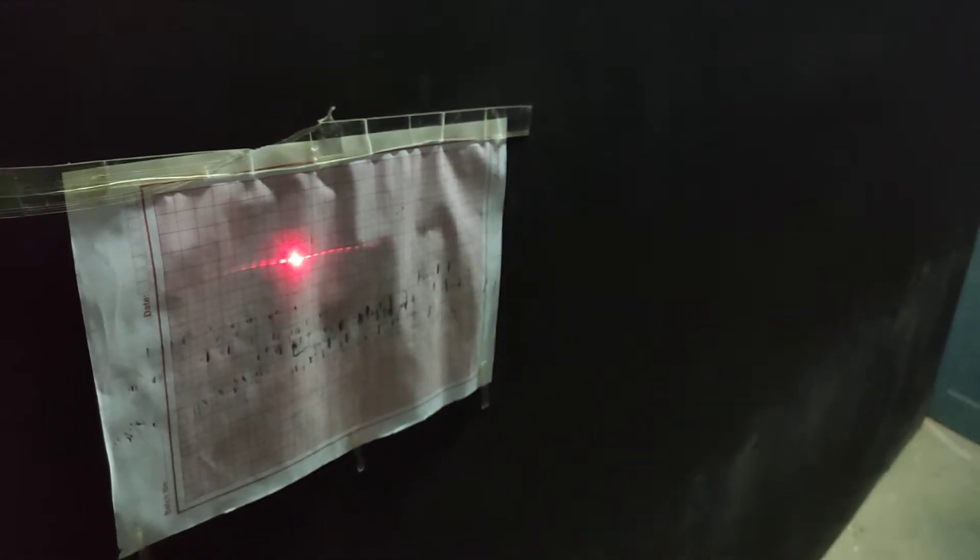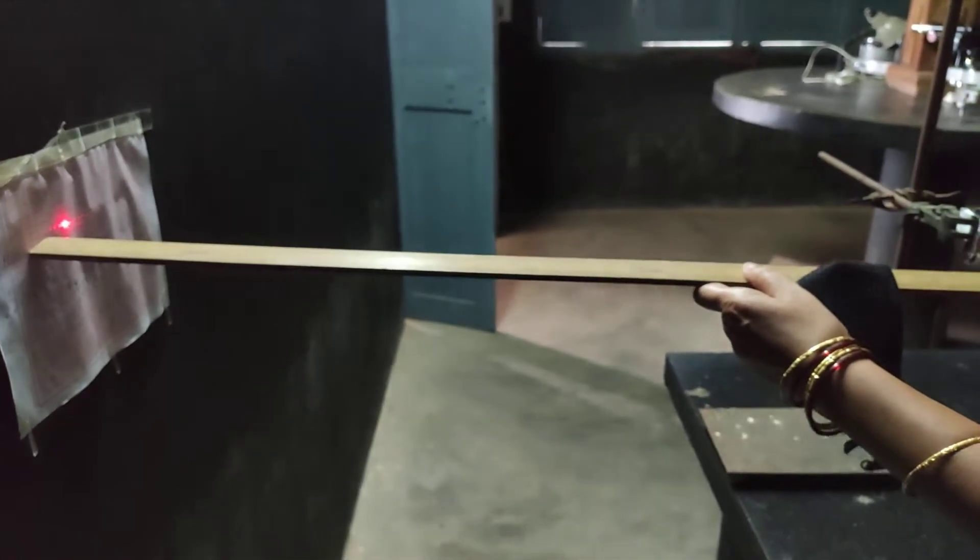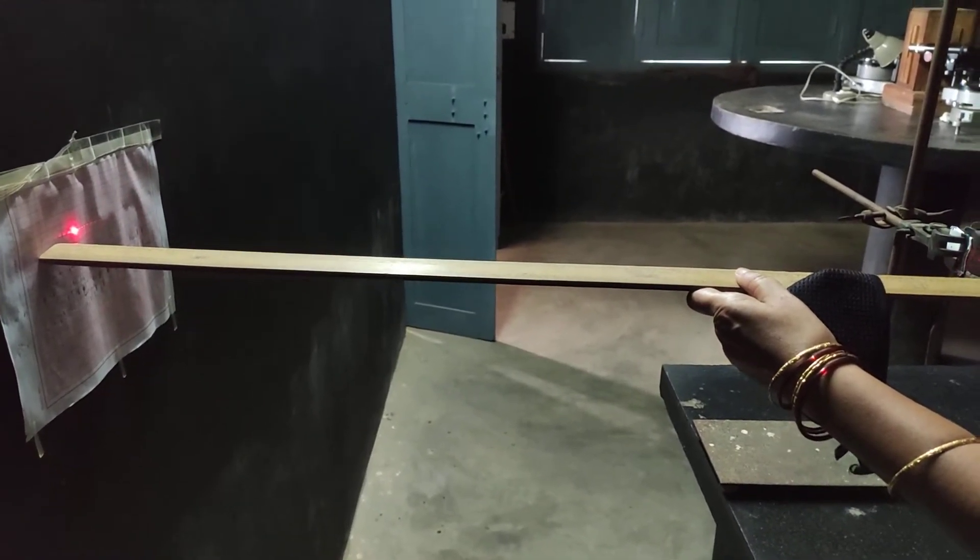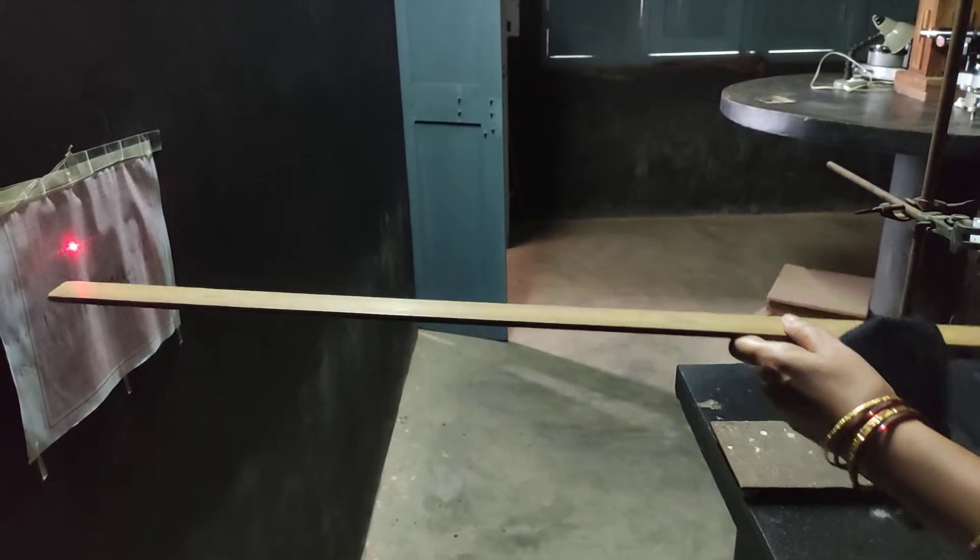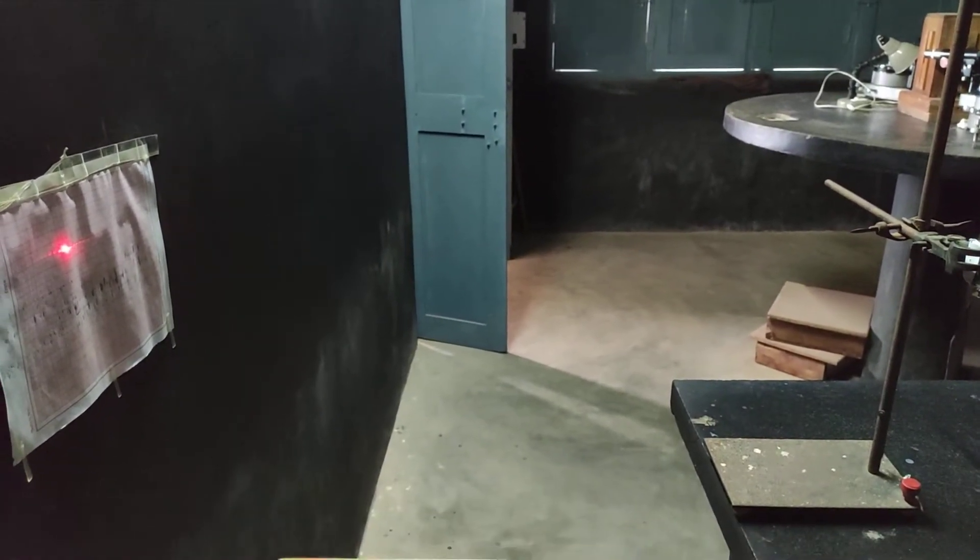Then repeat the experiment for different distances. Say 90 centimeter then keep on changing. Take this back using the scale. Take this back every time by increasing the distance by 10 centimeter. 80 centimeter, 90 centimeter, 100, 110 and 120.